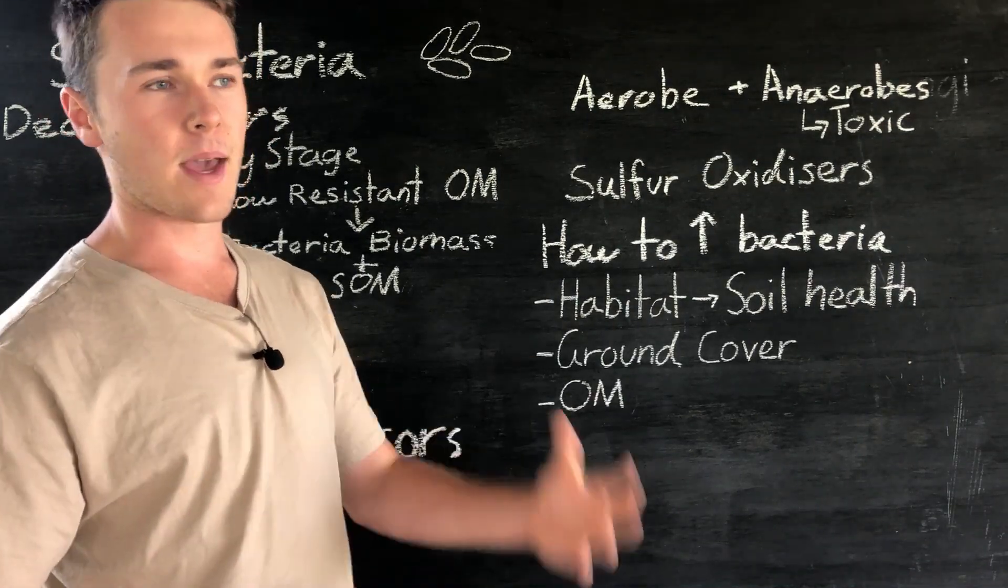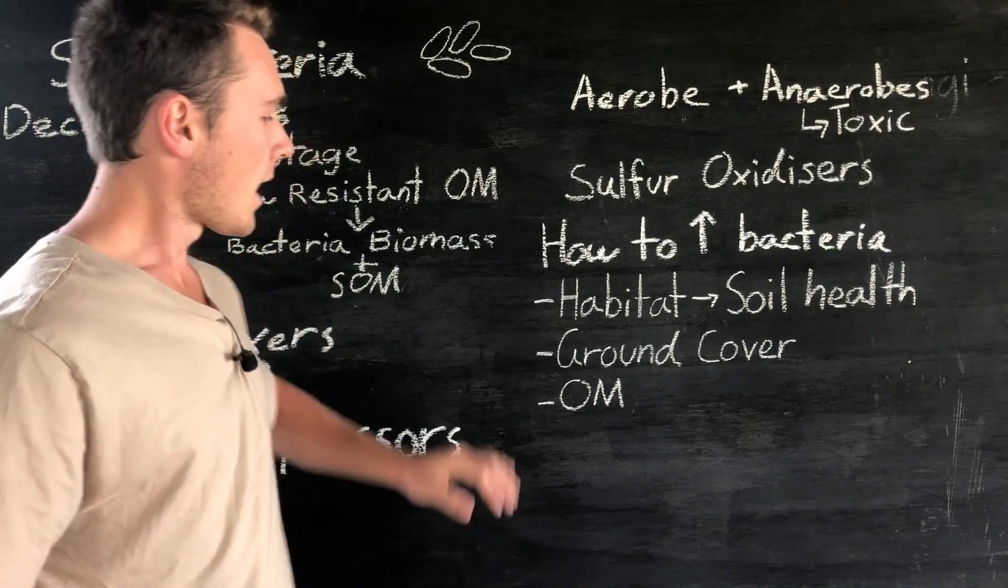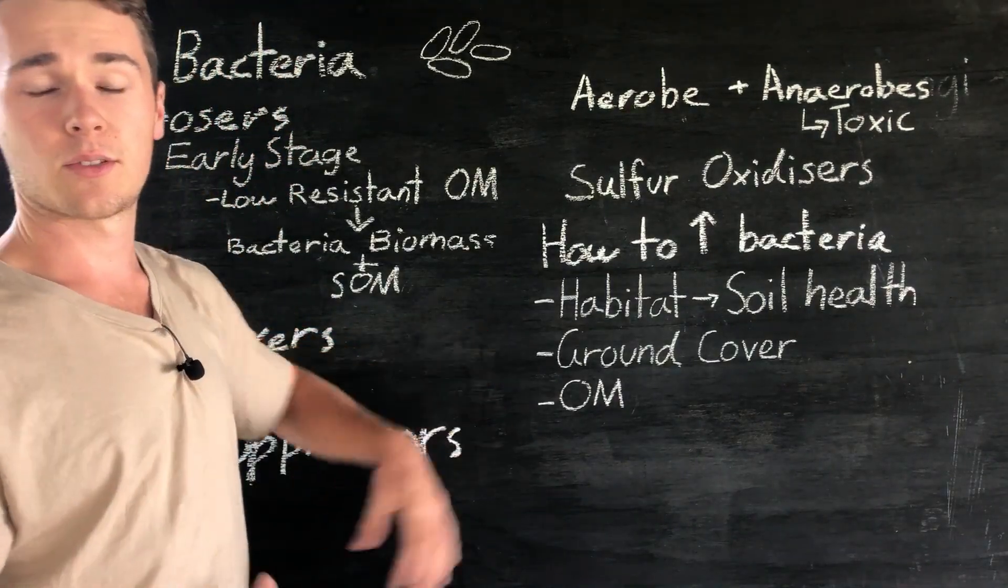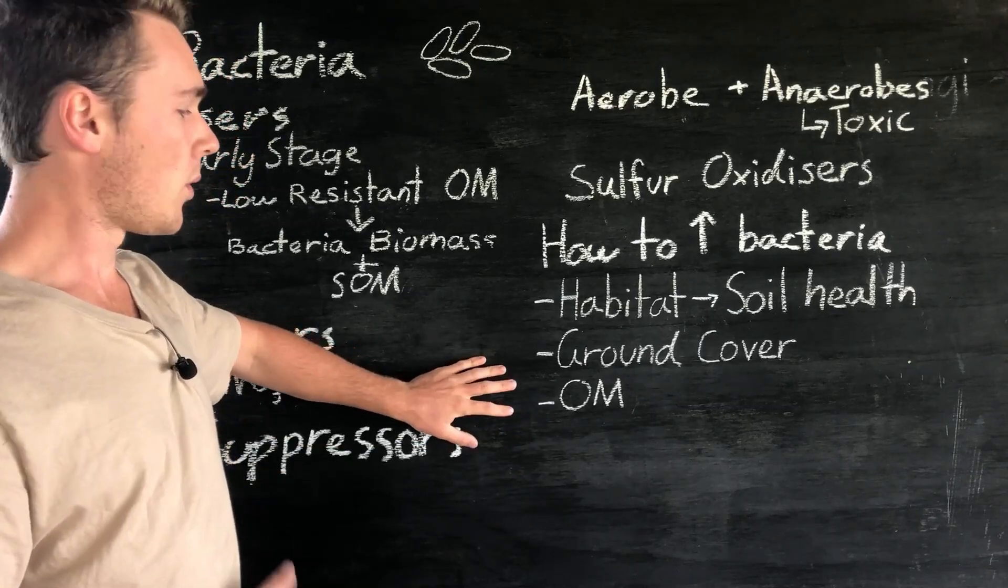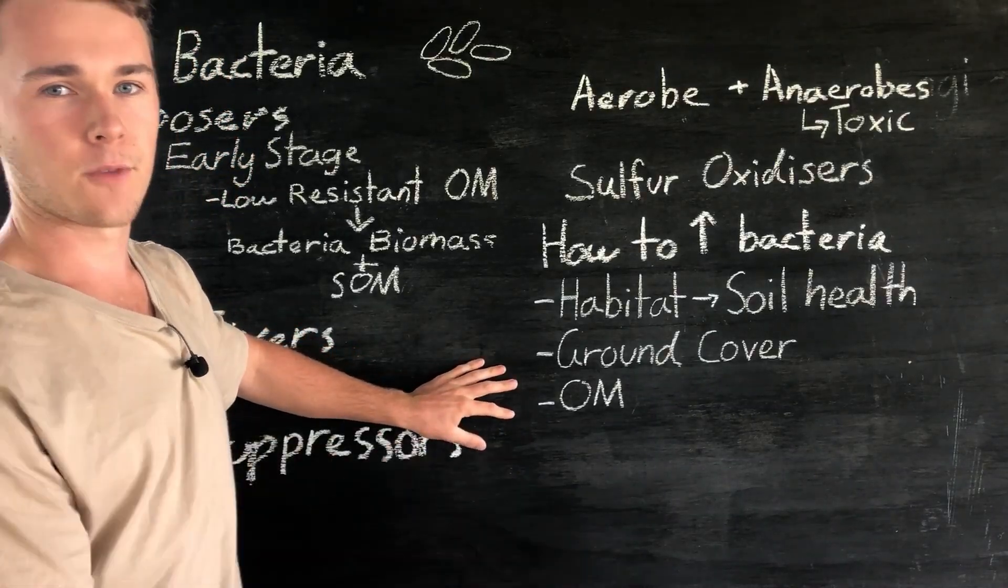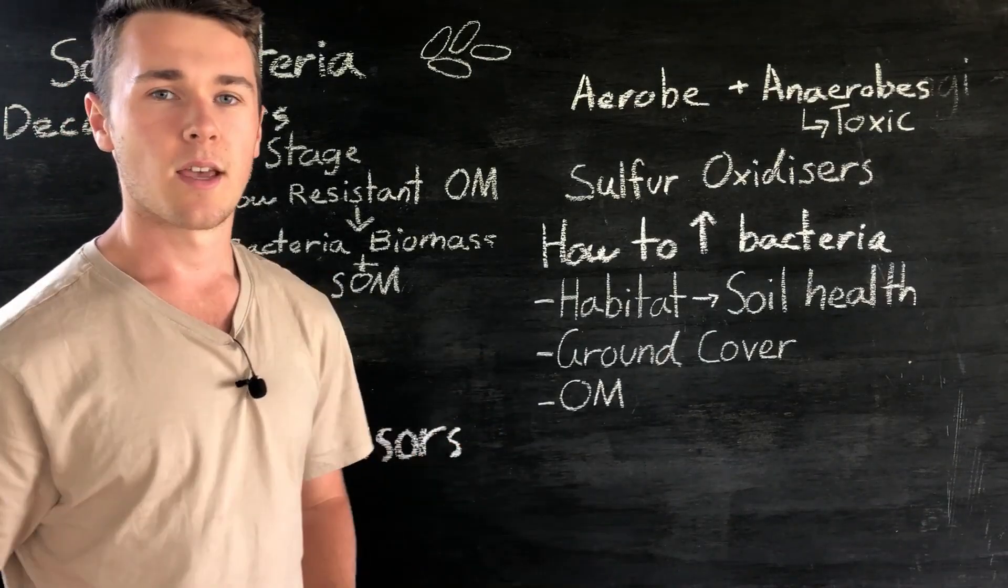Next is that bacteria don't really like being attacked by UV light and so we want to make sure we have lots of ground cover to protect them. And then finally we need organic matter for them to have lots of food and energy and nutrients for them to grow.